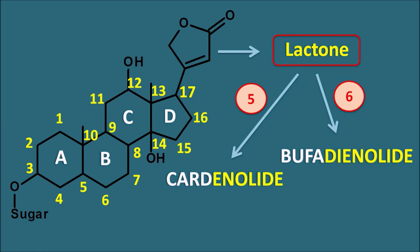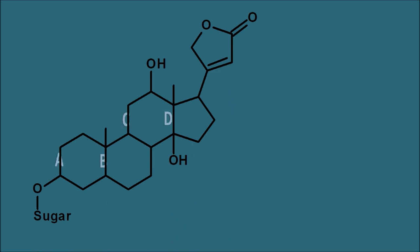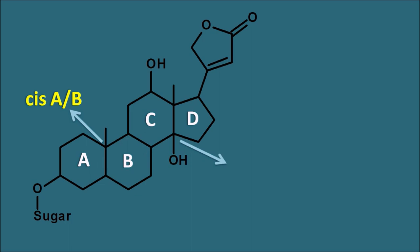They also have a sugar moiety at the third position which is attached through oxygen. Now, what is the stereochemistry of these cardiac glycosides? Within the structure, the rings A and B are saturated, so they are fused by cis configuration — cis A/B. When they are fused on the same side we call it cis; on the opposite side, trans. The rings C and D are again saturated, so they again show cis C/D fusion.